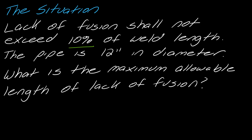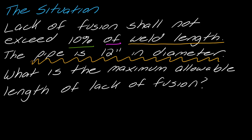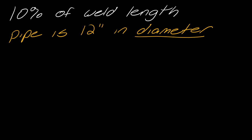We've got 10% of the weld length. From the first video, we talked about how math language lines up nicely with the calculation we need to do — we need to figure out 10% of the weld length. But the issue is we don't know the weld length. Reading the next sentence, it tells us: the pipe is 12 inches in diameter.